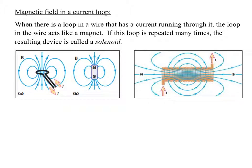Next, we're going to talk about something called the solenoid. A solenoid is the idea of taking a wire and looping it.